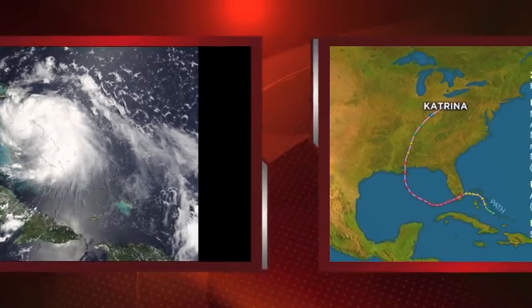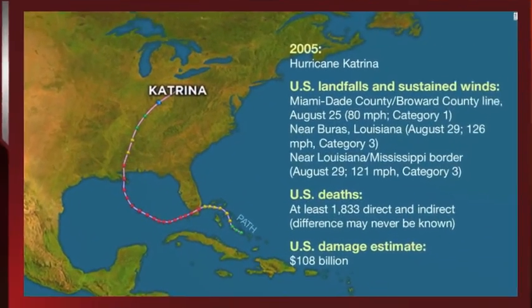Hurricane Katrina also caused heavy damage along the coast of Mississippi and Alabama, but more importantly, all of Louisiana.